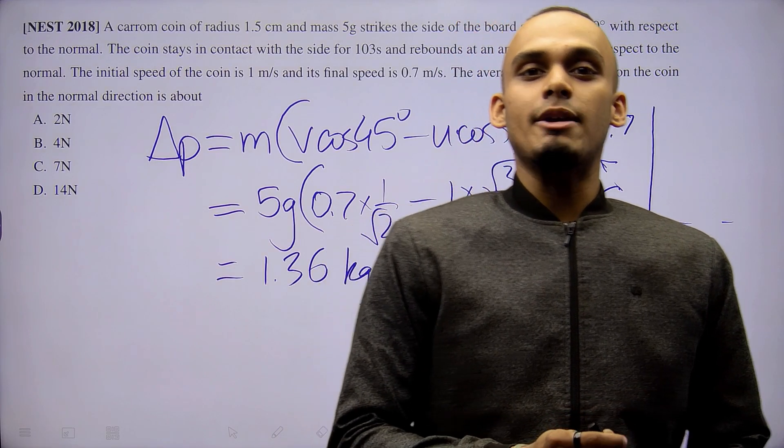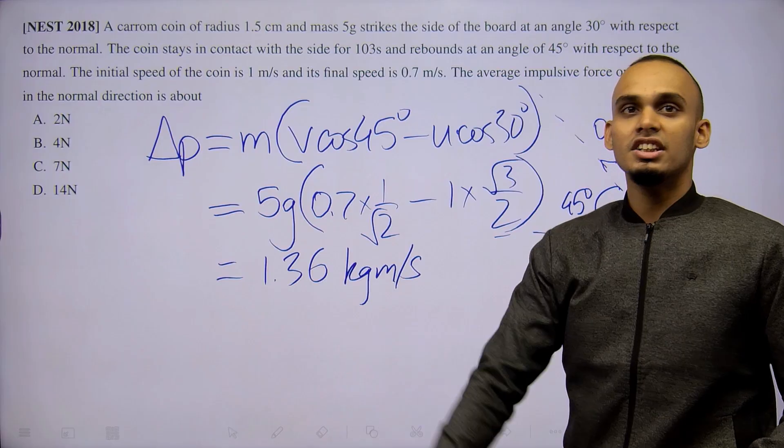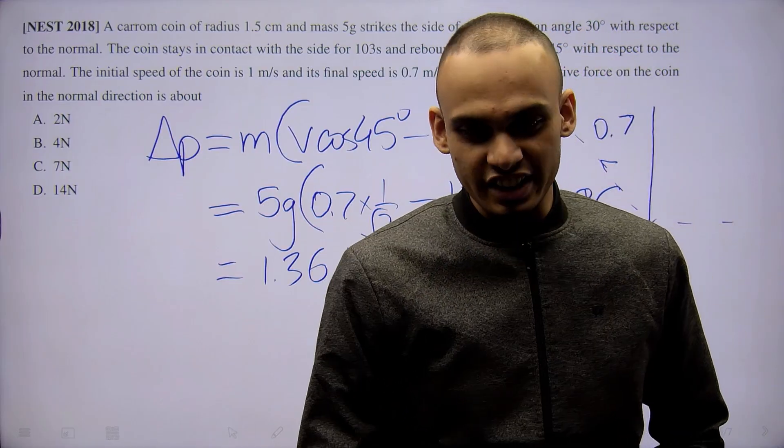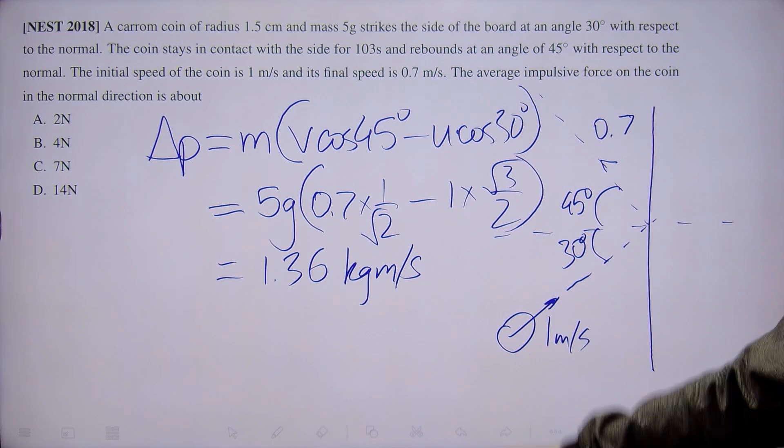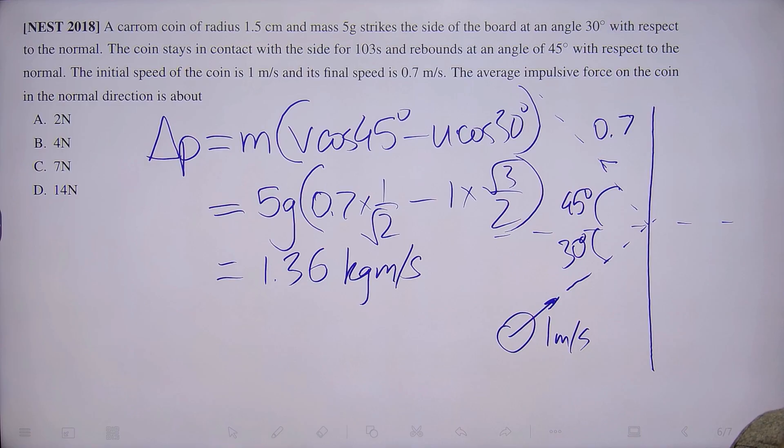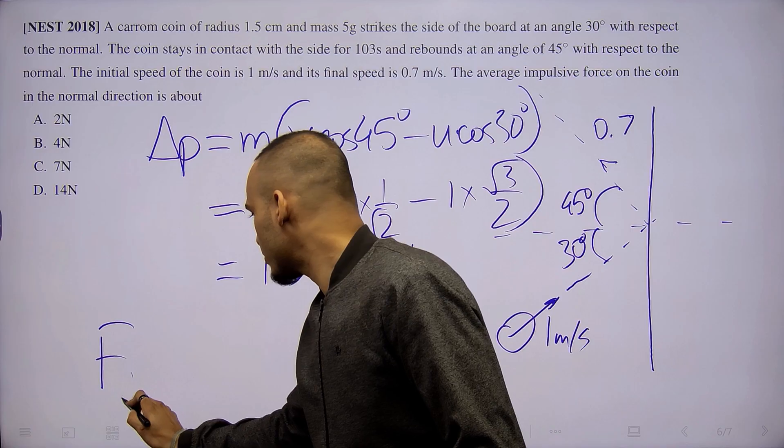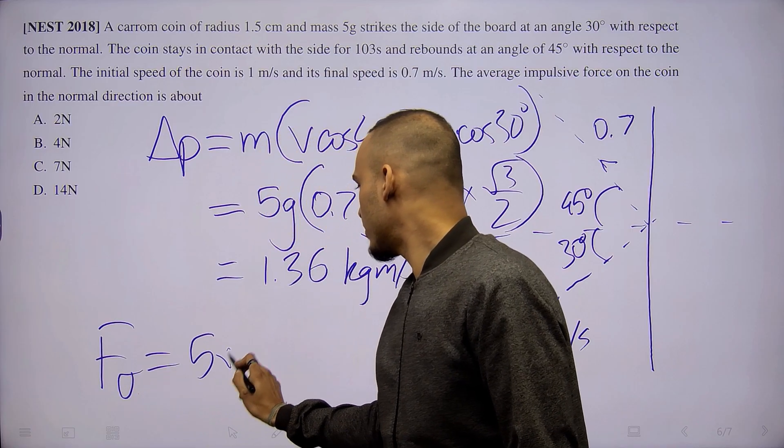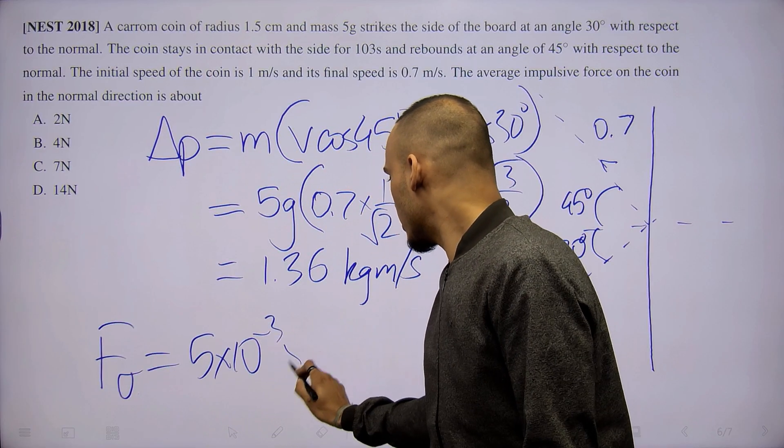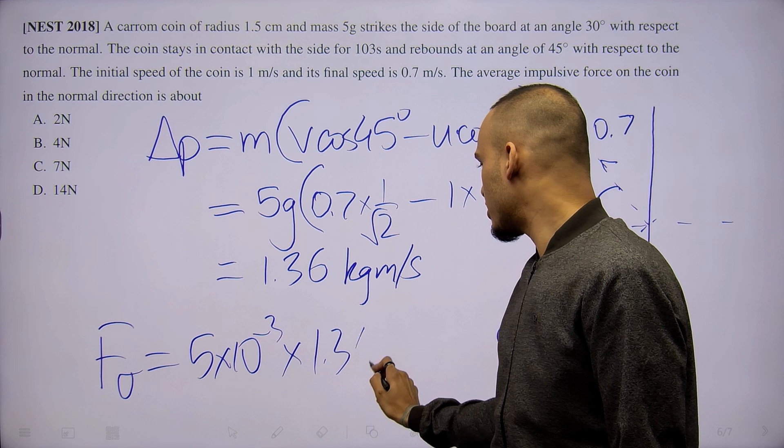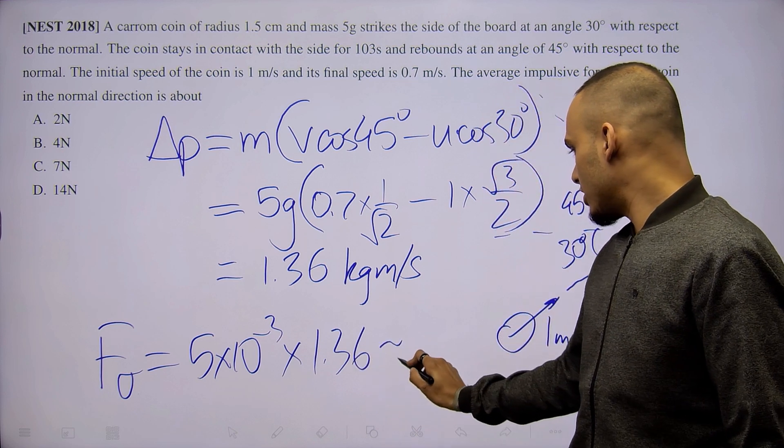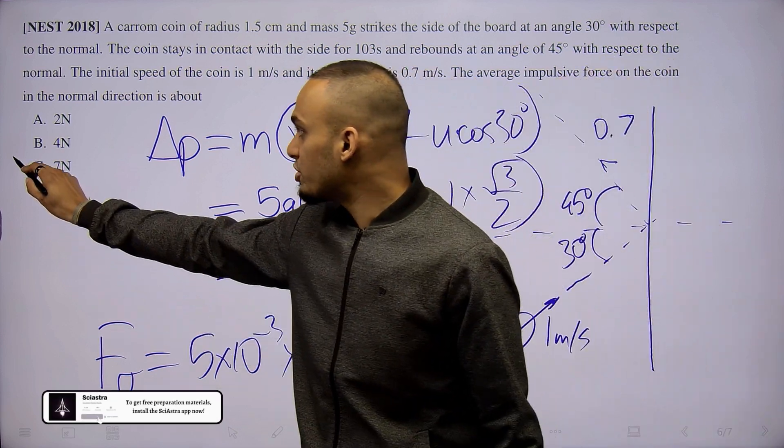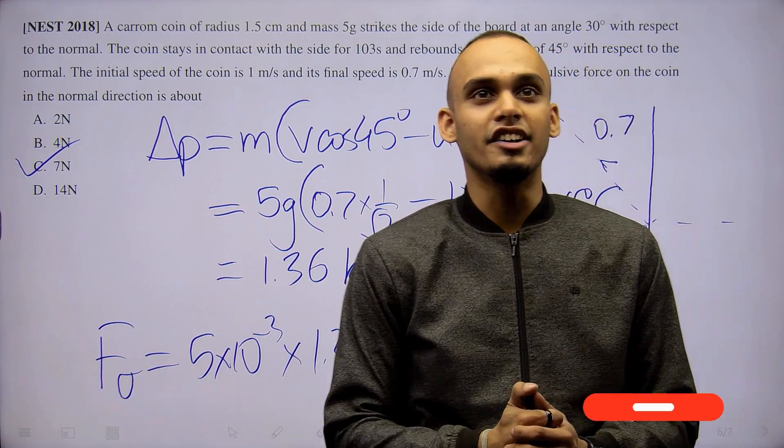Now we know that the time of contact for this entire collision is 10 power minus 3 seconds. So all we need to do is multiply that time with the momentum transfer that we have just calculated and we will get the total impulsive force as 1 times 10 power minus 3 times 1.36. Approximately this will come out to be 7 newtons which is option C, that is the correct answer.